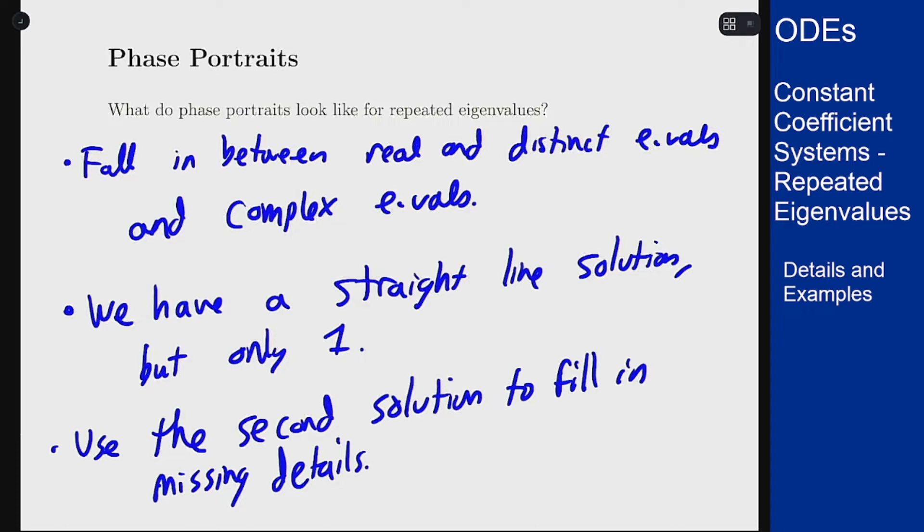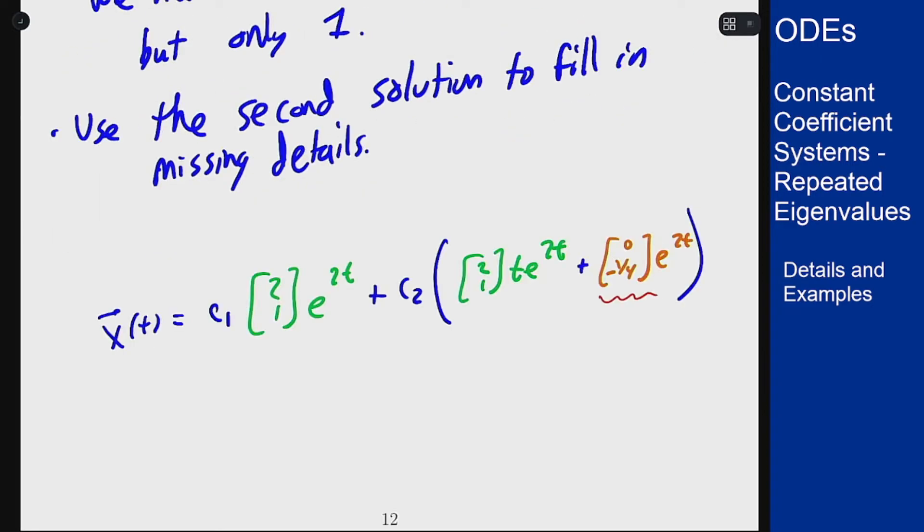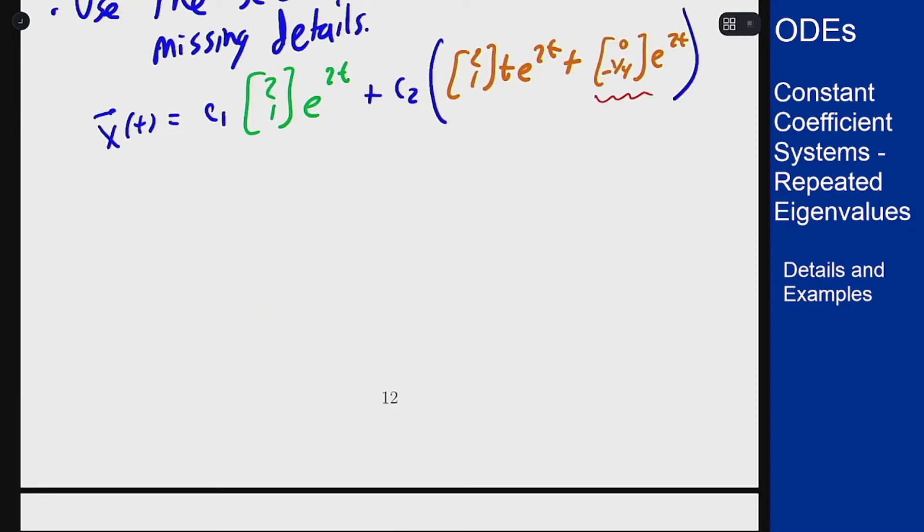Let's take our previous example and see what that will look like. For the last example here's what we had for general solution, and for the sake of making this clear I'm going to make this part orange so I can draw the green solution and orange solution separately and they'll match up as they should. We can draw the c1 solution pretty easily. It is a straight line through the origin at slope one half and the arrows go away.